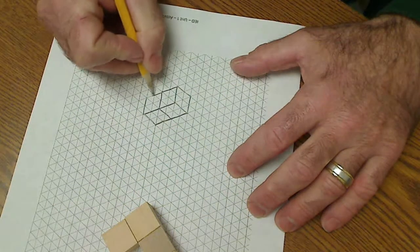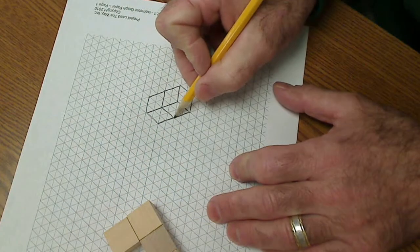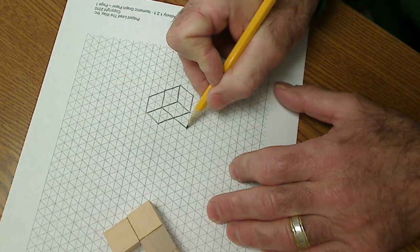And then once I've drawn those two blocks this way, I'm going to draw two blocks this way. One, two.